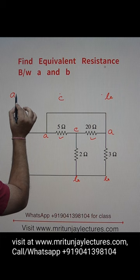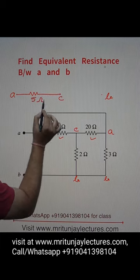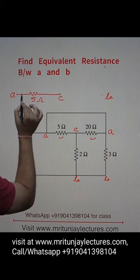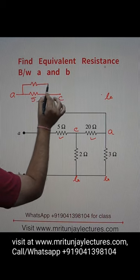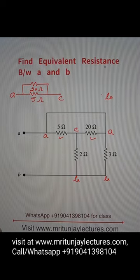Now a to c, a to c. That is how much? 5 ohm. A to c, 20 ohm, that is how much? 20 ohm, clear? After that...